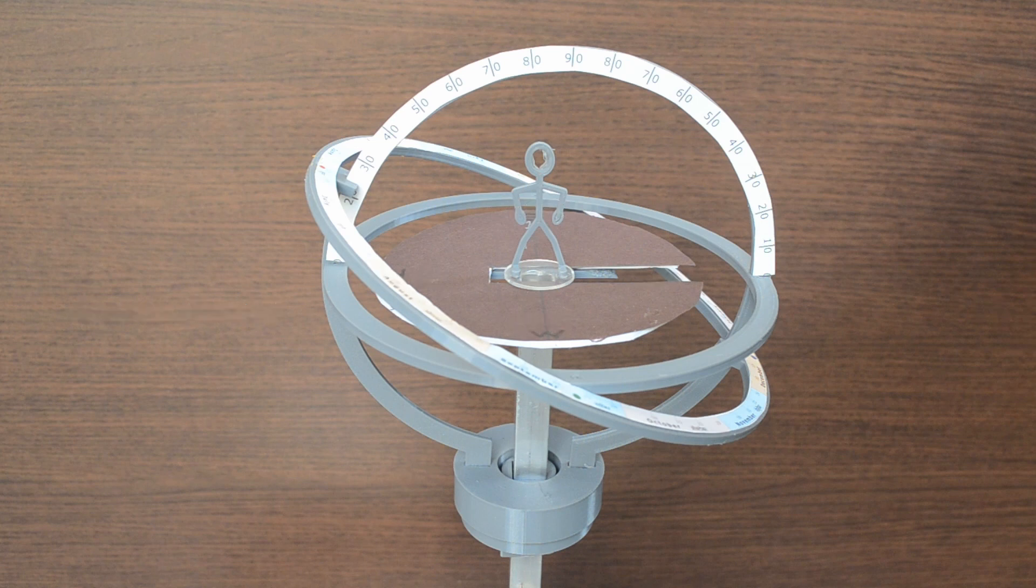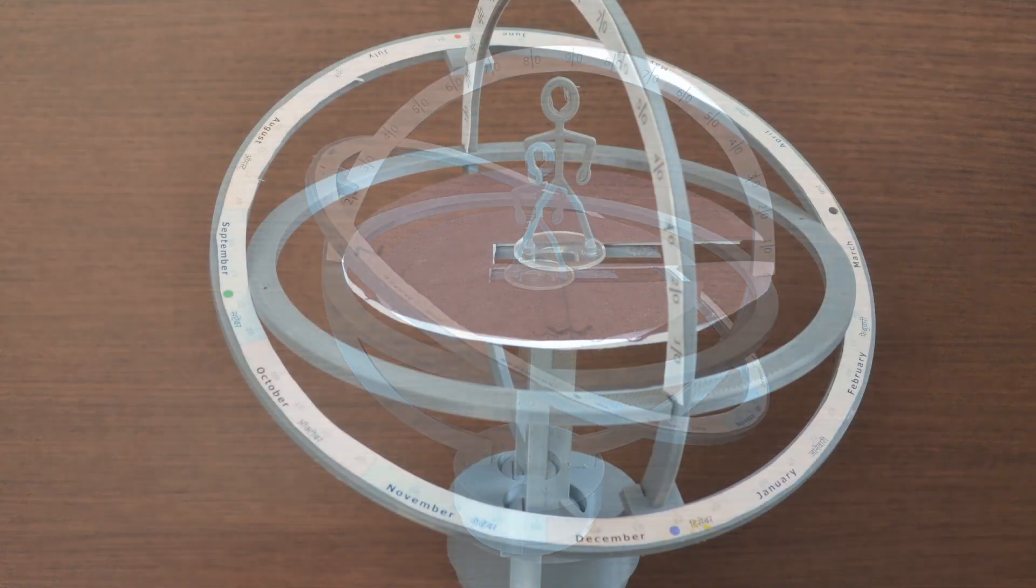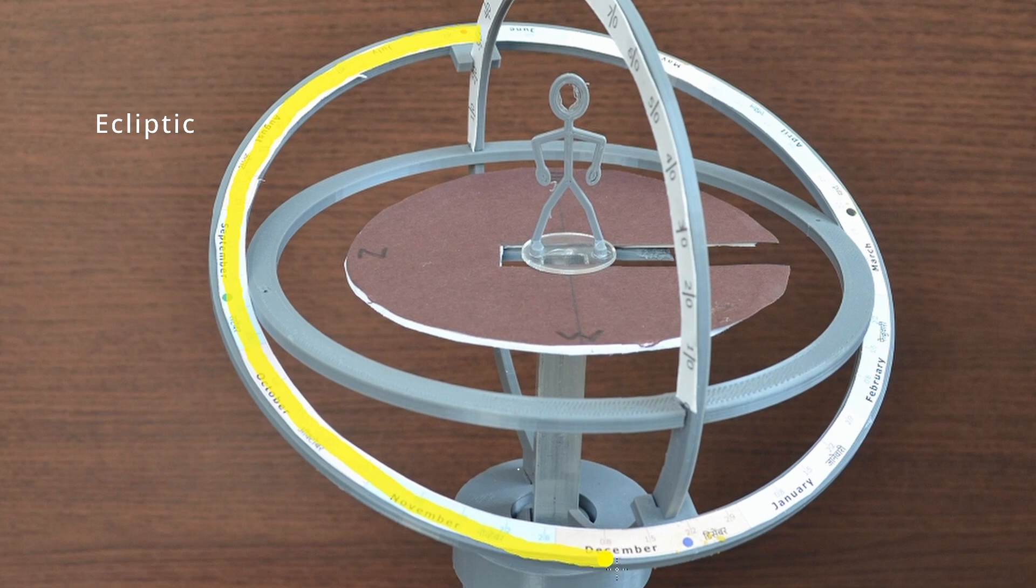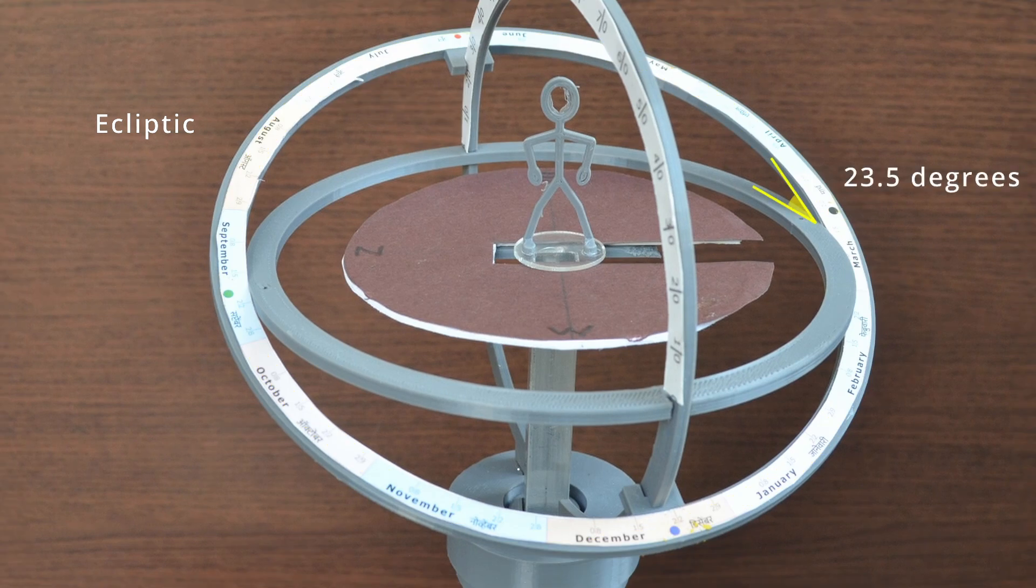The equator and poles of the celestial sphere can be considered as an extension to the earth's equator and poles. This outer ring represents ecliptic. This is the path sun takes throughout the year. It is inclined at an angle of 23.5 degrees to the celestial equator.